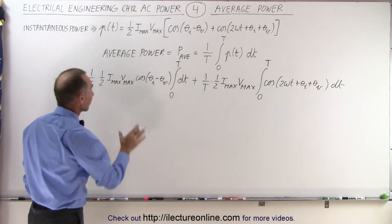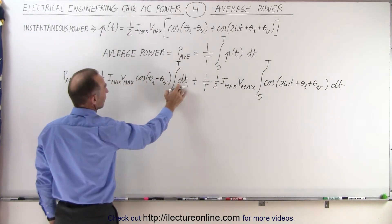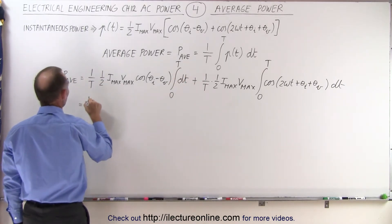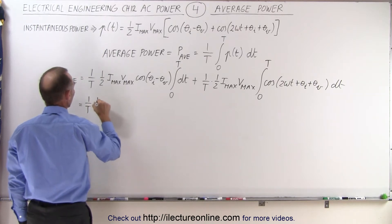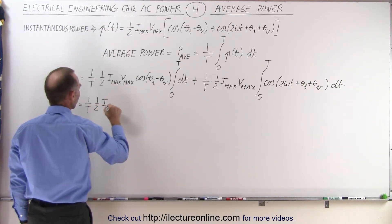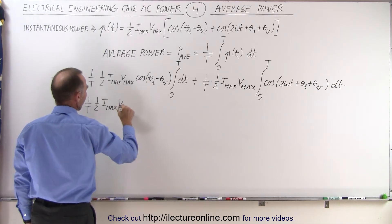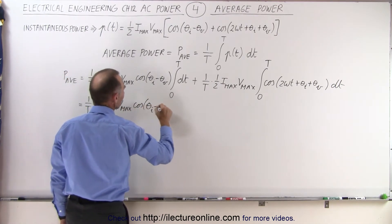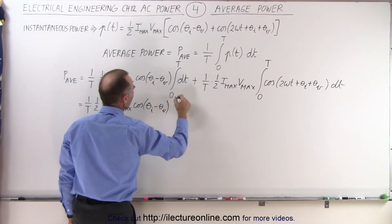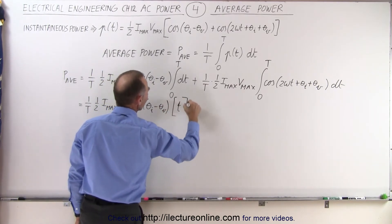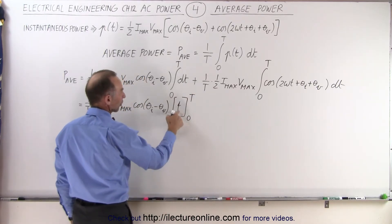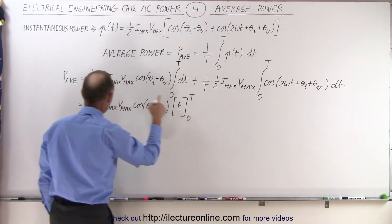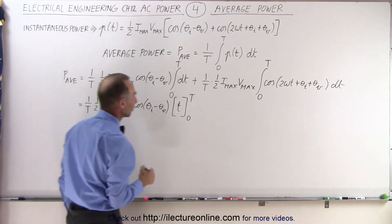Now when we integrate the first one, the integral of dt is t. Taking the limits from 0 to t, this equals 1 over t times ½ i_max v_max times the cosine of the difference of the phase angles, times t evaluated from 0 to t. When we plug in the lower limit we get 0, the upper limit gives t, and that t cancels with the 1 over t out front.